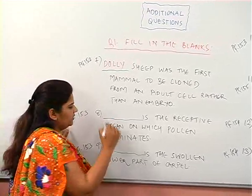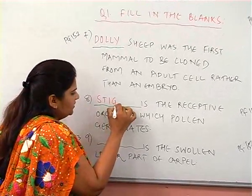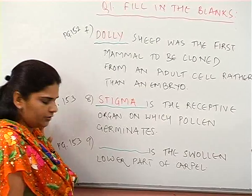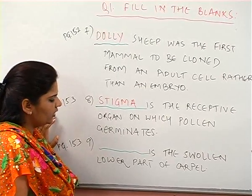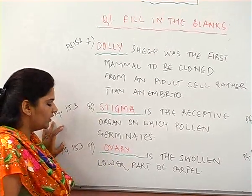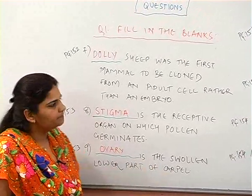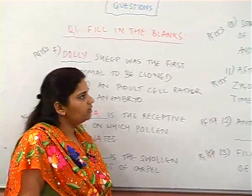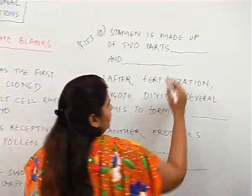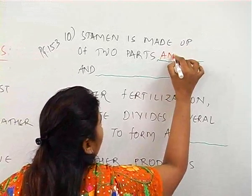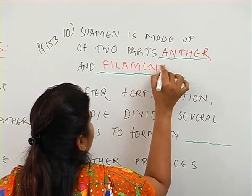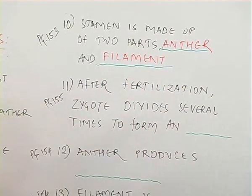Stigma is the receptive organ on which pollen germinates. The ninth question on the same page: ovary is the swollen lower part of the carpel. The tenth question on page 153: stamen is made up of two parts — anther and filament.